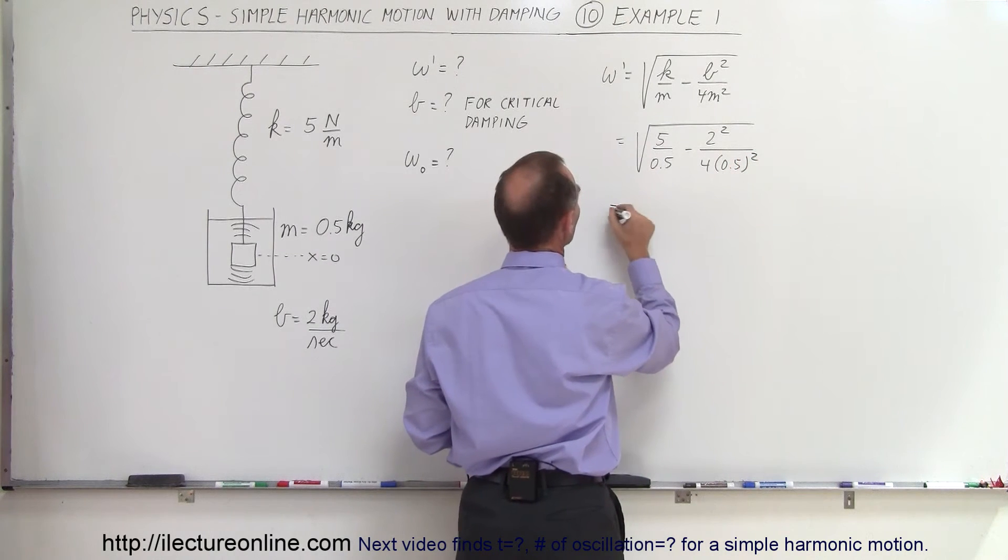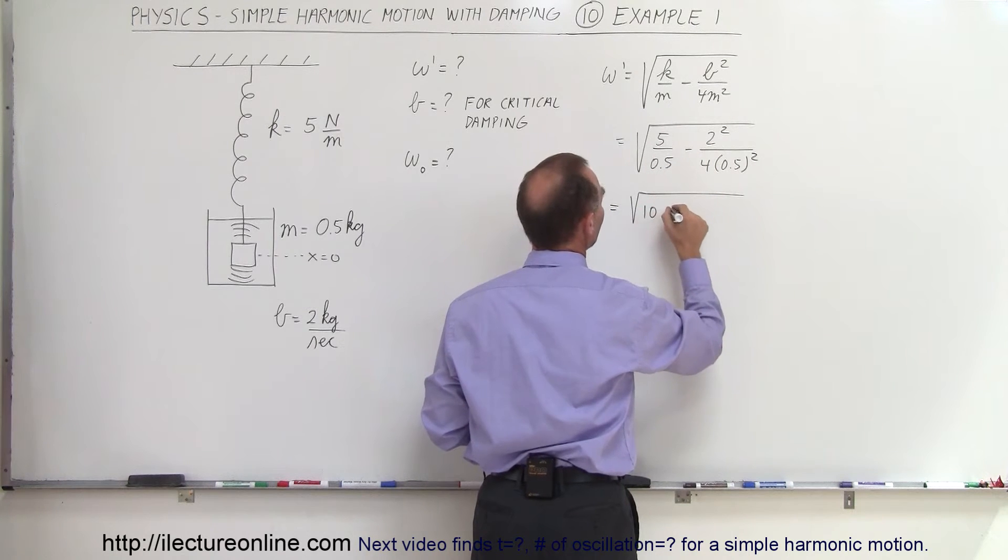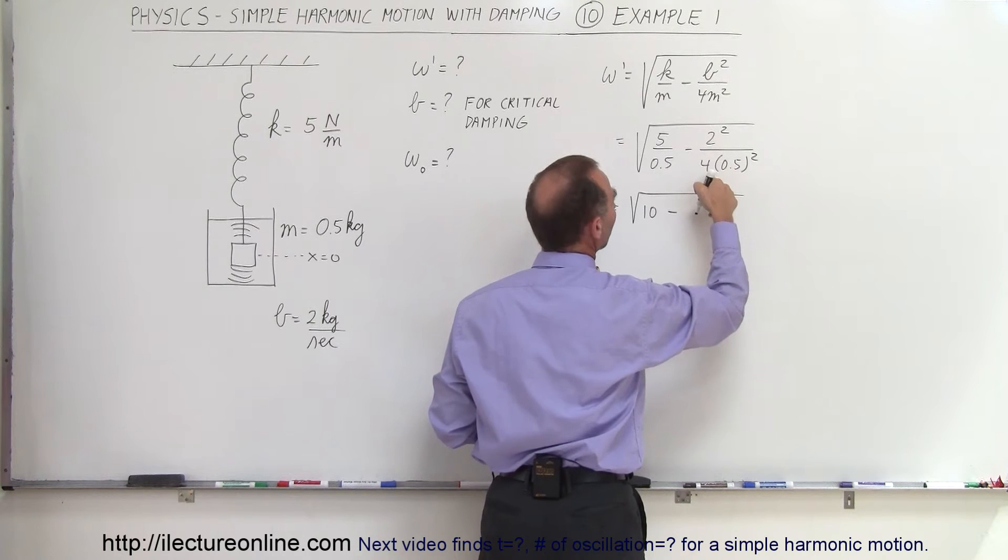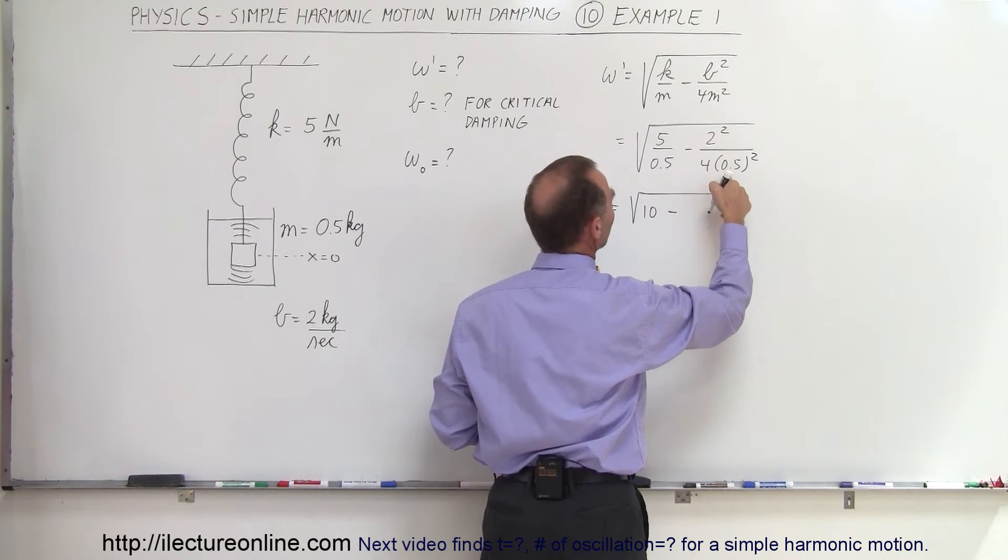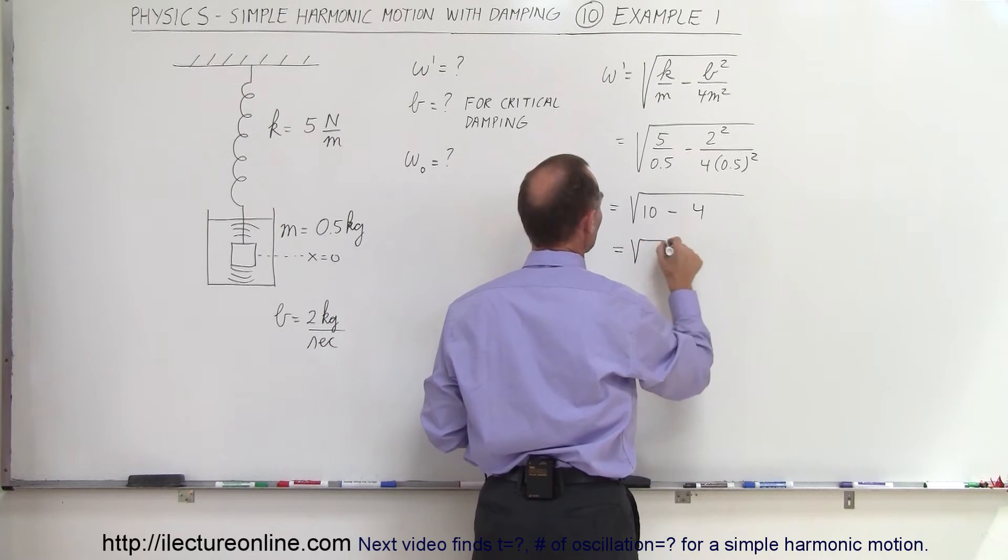Alright, so what's that equal to? This is equal to the square root of 5 divided by 0.5 which is 10 minus that would be 4 divided by 4 divided by 0.5 squared which is 0.25 squared, that would be 4. So this is equal to the square root of 6.